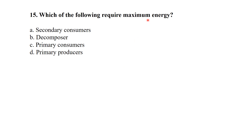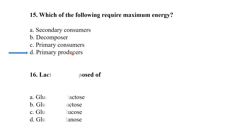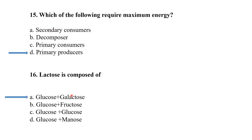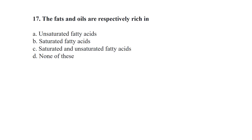Which of the following requires maximum energy to produce? Primary producers, i.e., plants, require maximum energy. Lactose, the milk sugar, is composed of glucose and galactose — option A is correct.